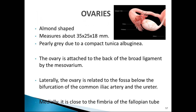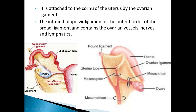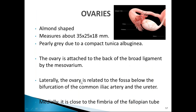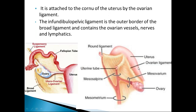The ovaries are the main reproductive internal genitalia of the female reproductive tract. They are almond-shaped and pearly gray due to the tunica albuginea. Each ovary is attached to the back of the broad ligament through the mesovarium, to the corner of the uterus via the ovarian ligament, and laterally suspended through the suspensory ligament (infundibulopelvic ligament) through which the ovarian vessels pass.